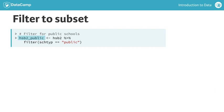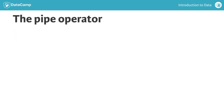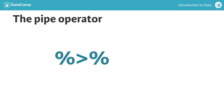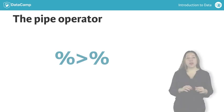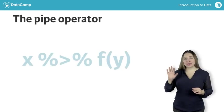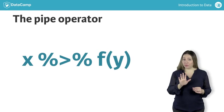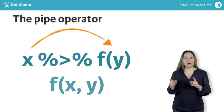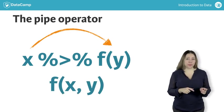So what do we mean by pipe it into the filter function? The pipe operator, which is percent greater than percent, tells R to pass the object that comes before it to the function that comes after it. So x pipe f of y becomes f of x, y.